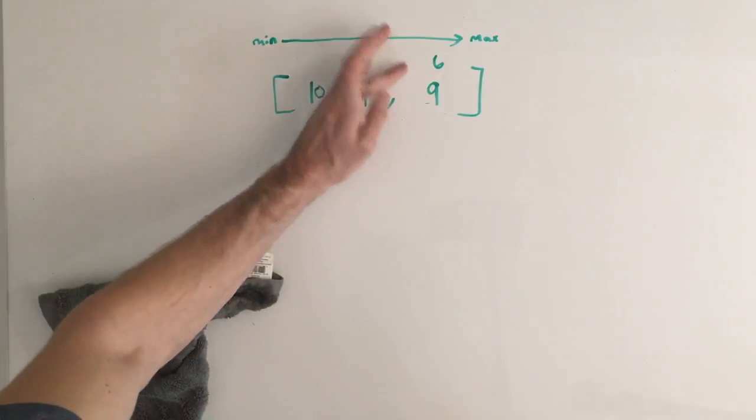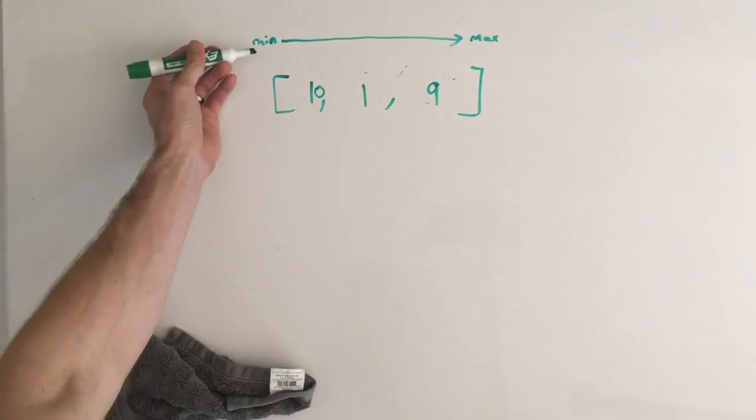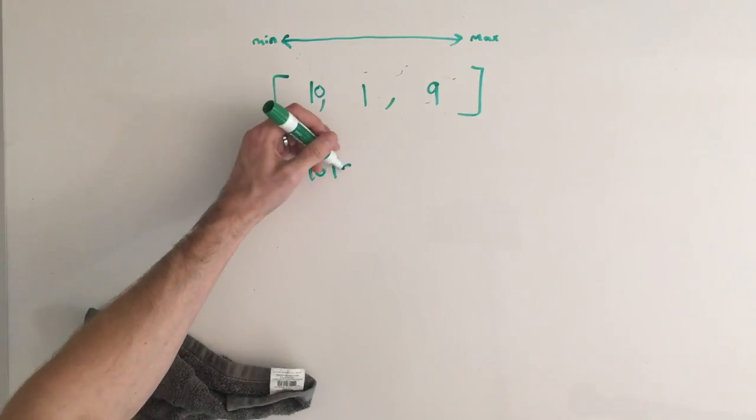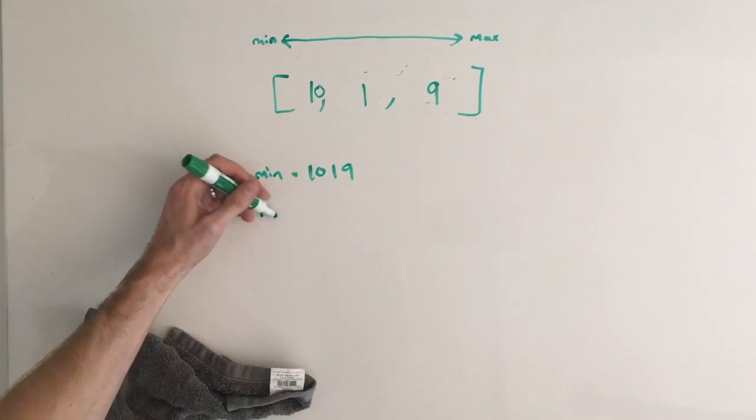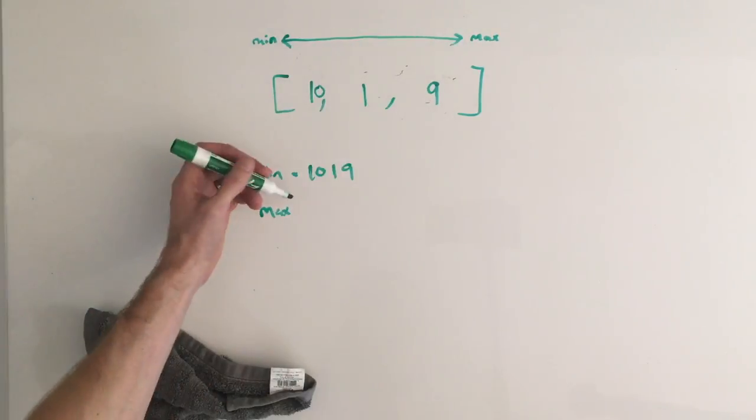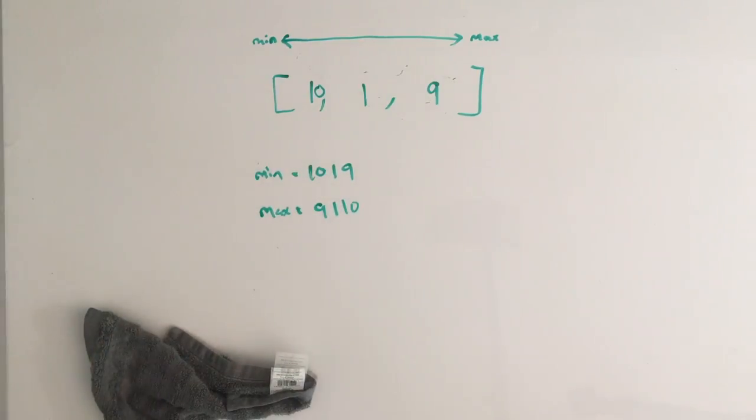So we can get rid of these little annotations that I added. And again, if we were just to print out left to right, so min, so 10, 1, and 9, we got our min. So if we were to print this out right to left, we are going to get our maximum, which is going to be 9, 1, 10.